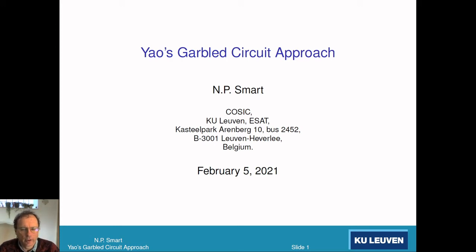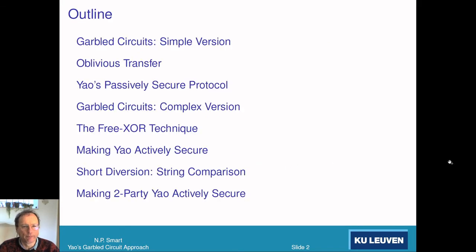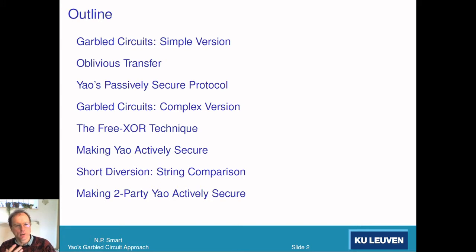Hello. We're going to be talking in this and some follow-up videos about Yao's garbled circuit approach to MPC, which is usually in the two-party setting. To give you an overview: today we're going to talk about garbled circuits in a very simple version, then oblivious transfer, the actual Yao's protocol, optimizations, how we can make things more efficient, the Free-XOR technique, how to make it actively secure, and other extensions.